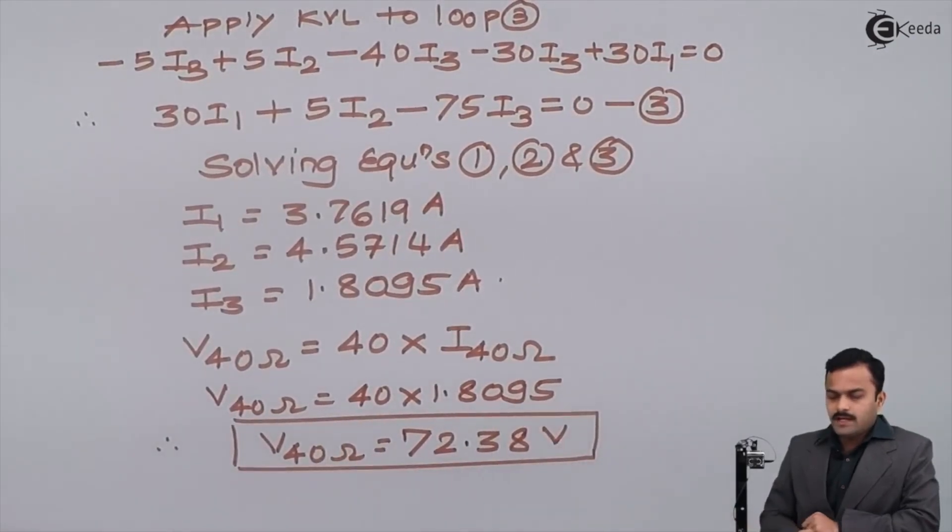So here we have seen that whenever I know current flowing through a particular branch, I can get voltage drop across that particular branch if the resistance and current flowing through that branch is known to me. In subsequent videos, we will see more numericals based on mesh analysis. Thank you.